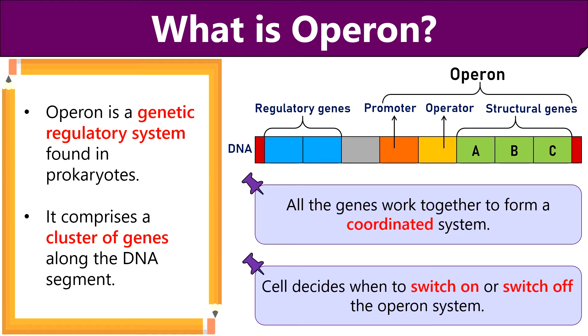Another example is, E. coli cell uses tryptophan operon to synthesize tryptophan amino acid when there is low concentration outside the cell.